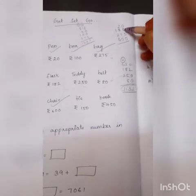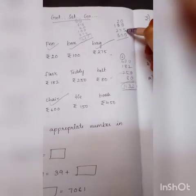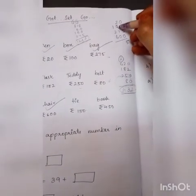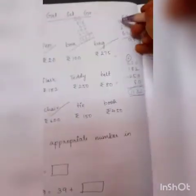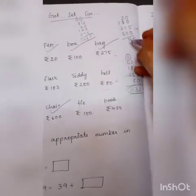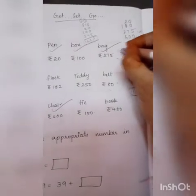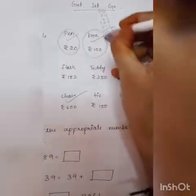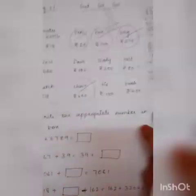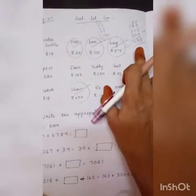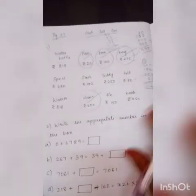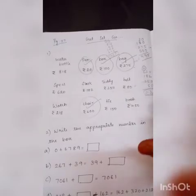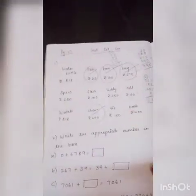Now I am going to add: 0 plus 0 is 0, 0 plus 5 is 5, 5 plus 0 is 5. Then 2 plus 0 is 2, 2 plus 7 is 9, 9 plus 0 is 9. Then 1 plus 2 is 3, 3 plus 6 is 9. So the answer is 995, which is less than 1000. So we can buy these four things. Round these four items in your textbook.